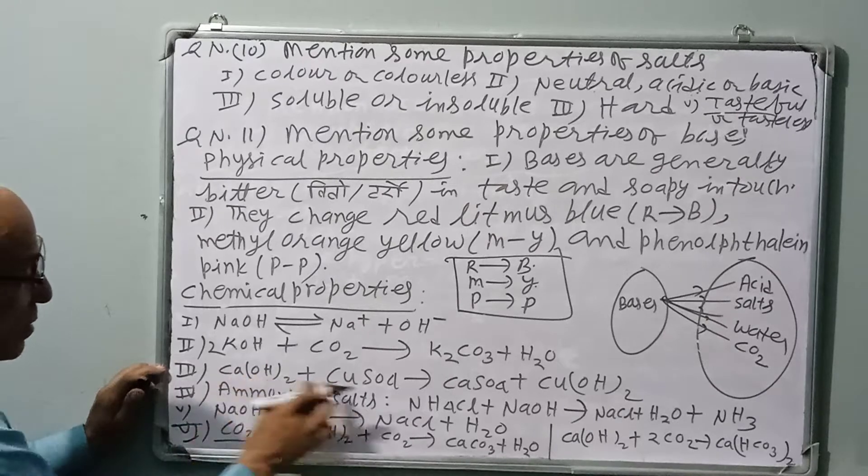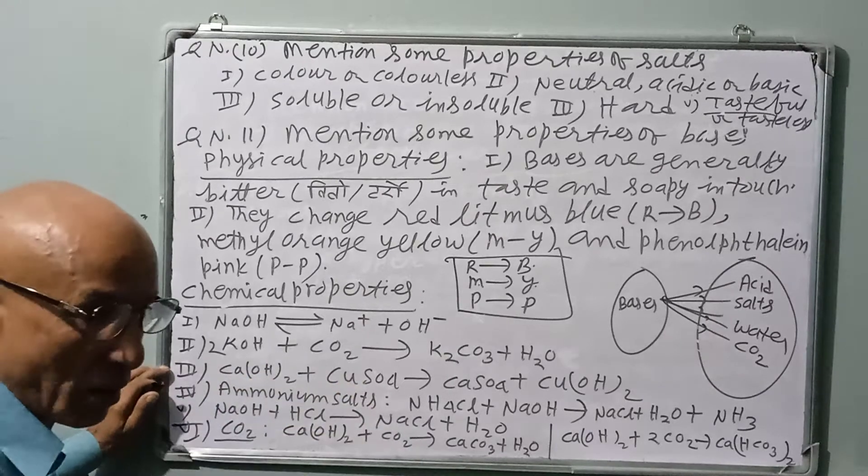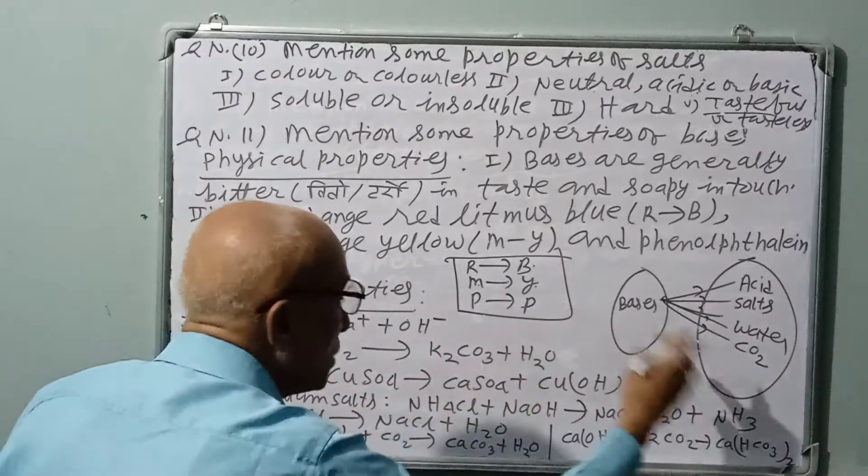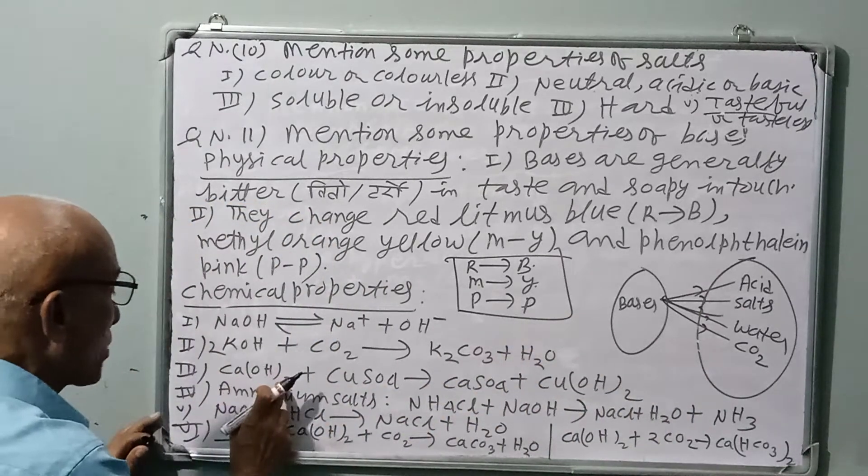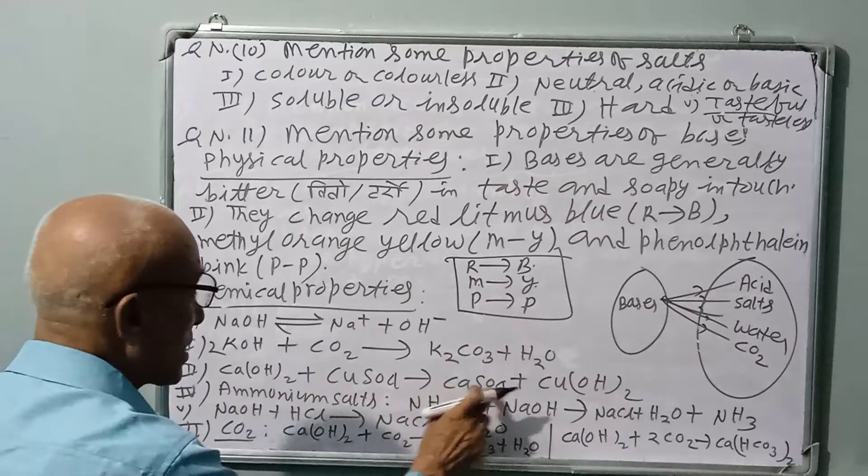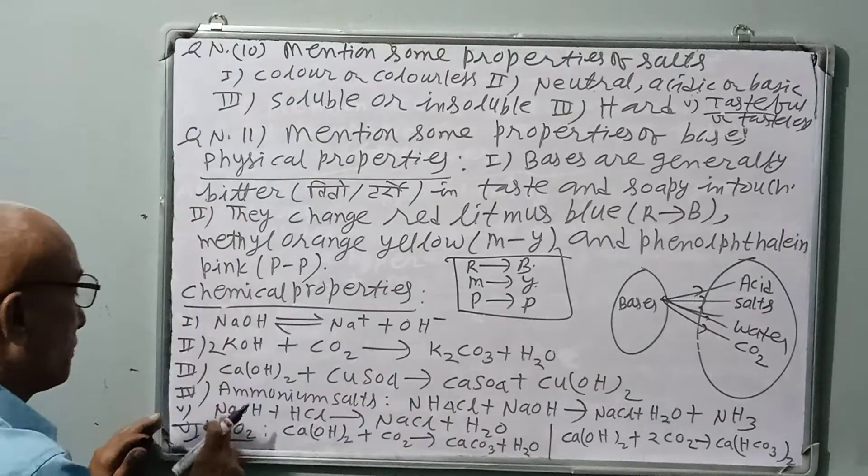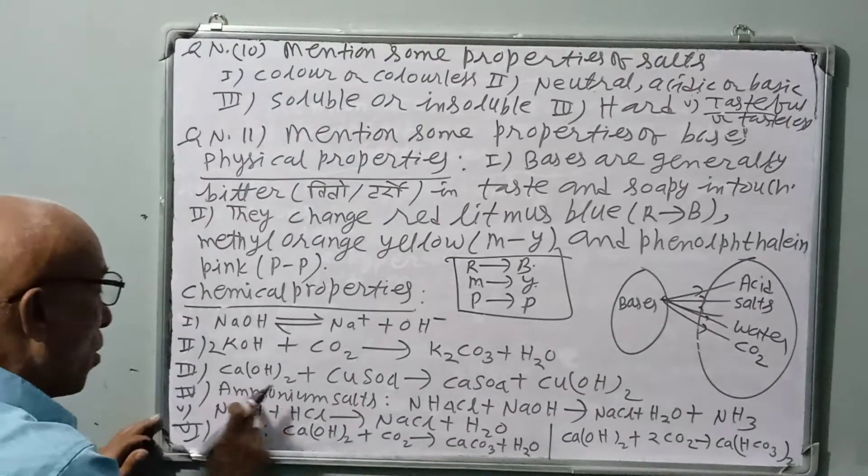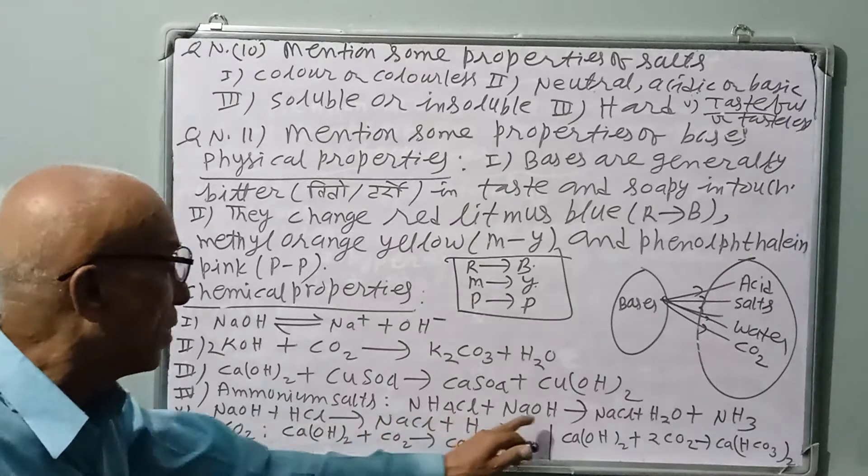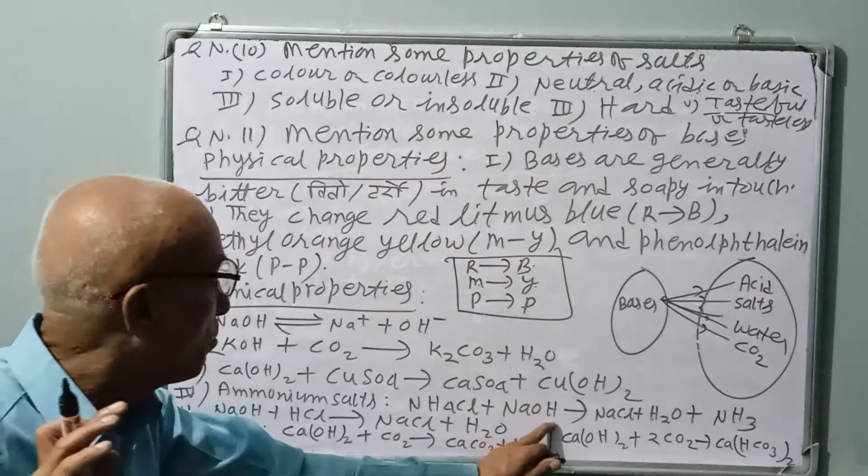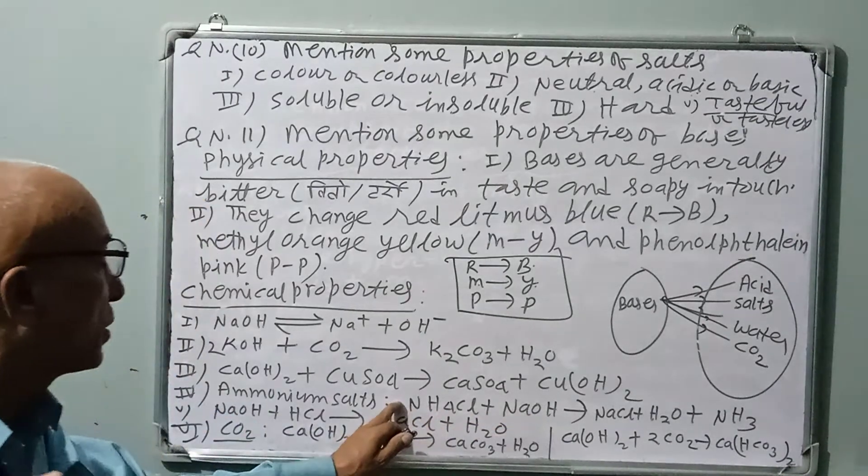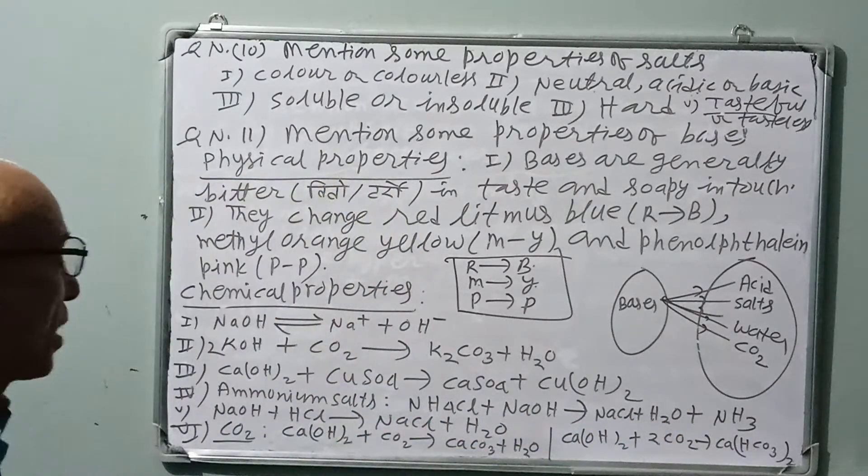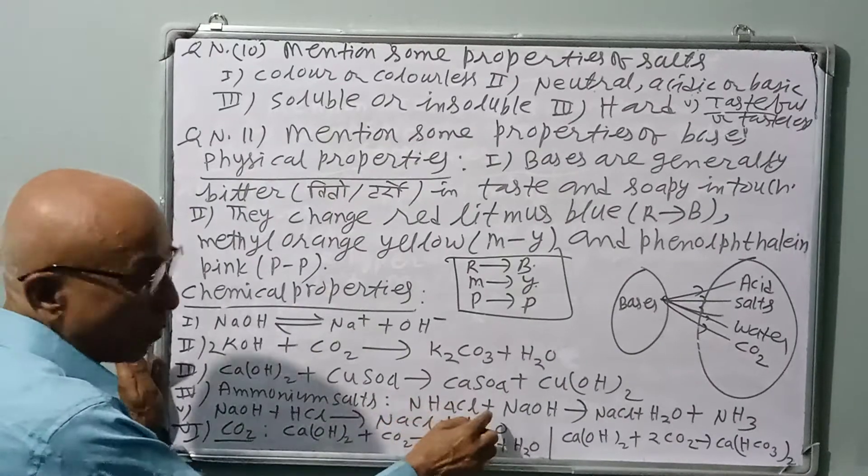Alkalis or bases react with sulfate or chloride or some other salts to form new salt. Like calcium hydroxide plus copper sulfate produces calcium sulfate and copper hydroxide. This is soluble, this is insoluble.